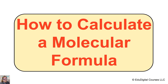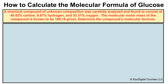Hey you guys, this is Mr. Millings, and in this video we are going to learn how to calculate a molecular formula — specifically, the molecular formula of glucose. In this example, a chemical compound of unknown composition was carefully analyzed and found to consist of 40.02% carbon, 6.67% hydrogen, and 53.31% oxygen. The molar mass of the compound is known to be 180.18 grams per mole.